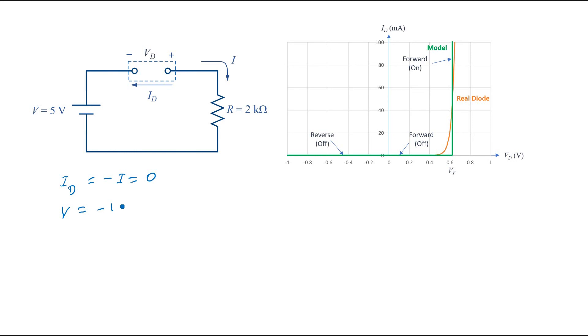The voltage across the diode is equal to the applied voltage because the current is 0 and the voltage drop across the resistor would be 0.